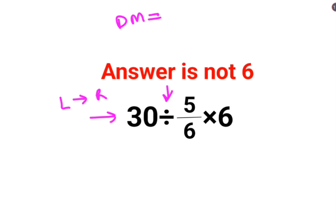So first operation which needs to be done is 30 divided by 5 by 6. So whenever you have division involving a fraction, you need to follow the rule of KCF.